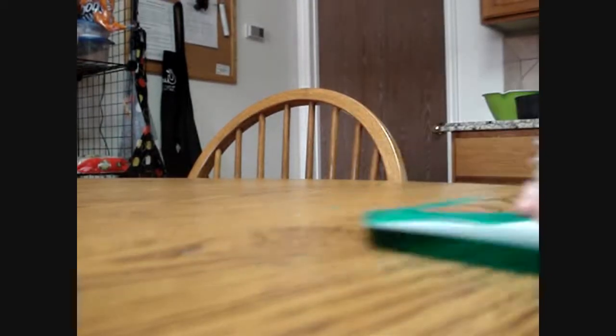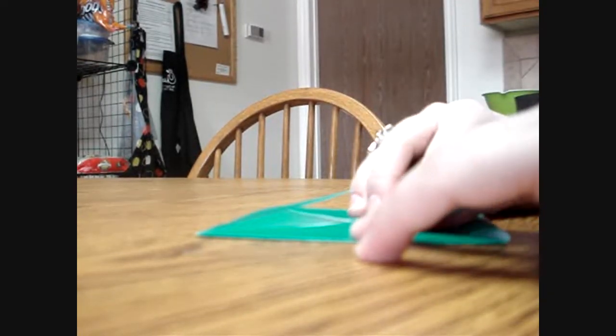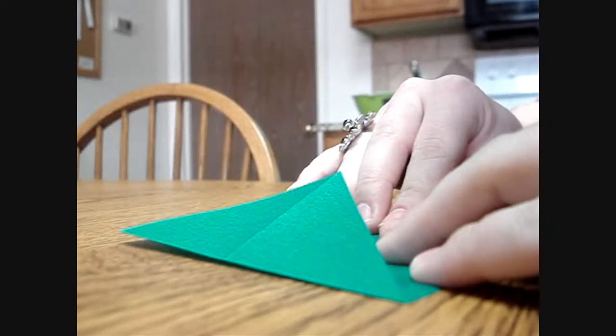So the first thing you're going to do is you're going to start off folding it like you're making one of those fortune teller things that you used to do in elementary school. So you're going to fold each of the corners into the center. I like to fold it diagonally both ways first so that I have lines to follow.